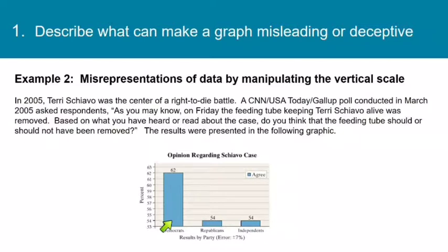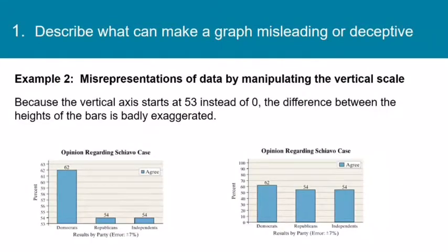The graphic shows that Democrats agreed much more strongly than either Republicans or Independents. Only the problem is that if you look closely at this graph, the vertical axis does not start at zero. Let's look at the same graph zoomed out so that we can see the entire vertical axis. When we zoom out so that the vertical axis starts at zero, we can see that the bar for Democrats is taller than the other two bars, but it's not as drastically taller as the original graph would have had us believe.